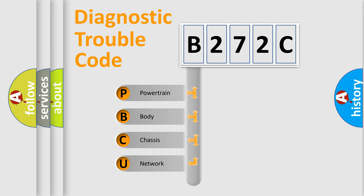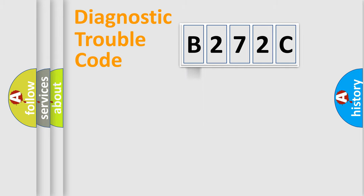We divide the electric system of automobiles into four basic units: Powertrain, Body, Chassis, and Network.